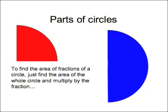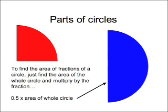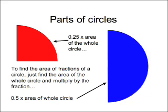Parts of circles. If you've got a fraction of a circle, you can find the area of it just simply by dividing by the appropriate fraction. So, for instance, to find half a circle, you multiply by 0.5, and to find a quarter of a circle, you multiply by 0.25.